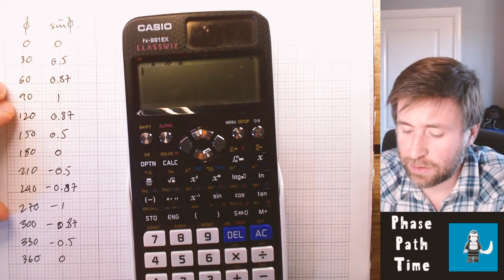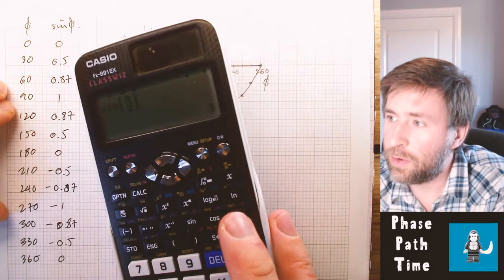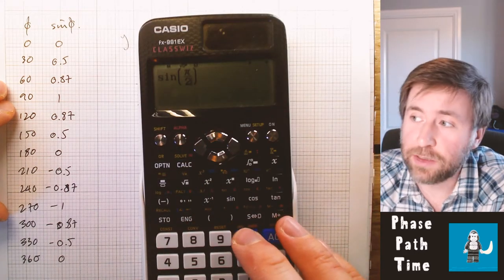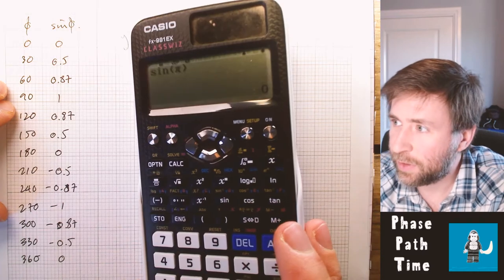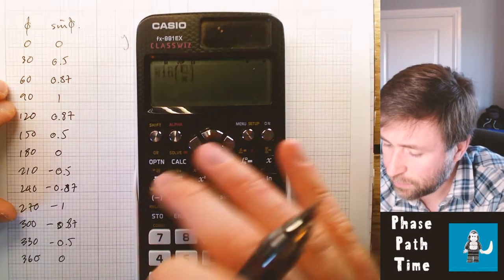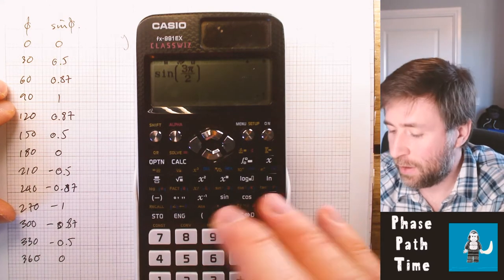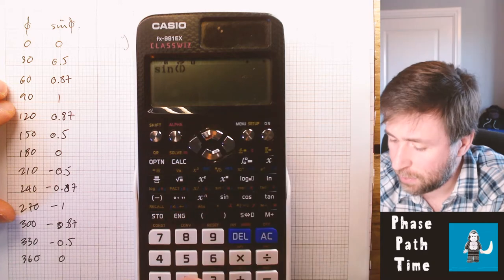90 degrees in radians is pi over 2 is 1. 180 degrees is just pi. That's back down to zero again. 270 is 3 pi over 2, so that's one and a half pi. And then 360 is 2 pi.